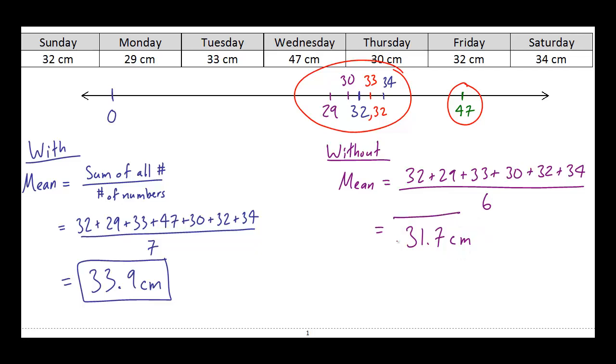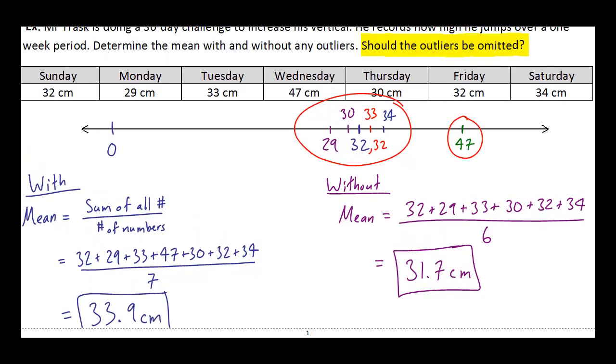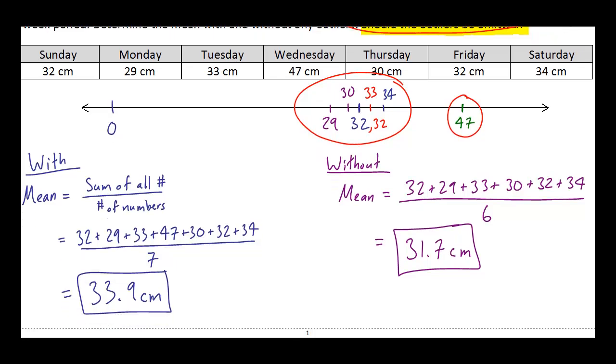Now believe it or not, that's actually the easy part. The tricky question is this one right here, let's just go back to, the question is, should the outliers be omitted? So basically what this question is asking is, if someone was asking what my vertical is, should I tell them it's 33.9 like I calculated over here, or should I tell them that it's actually 31.7?